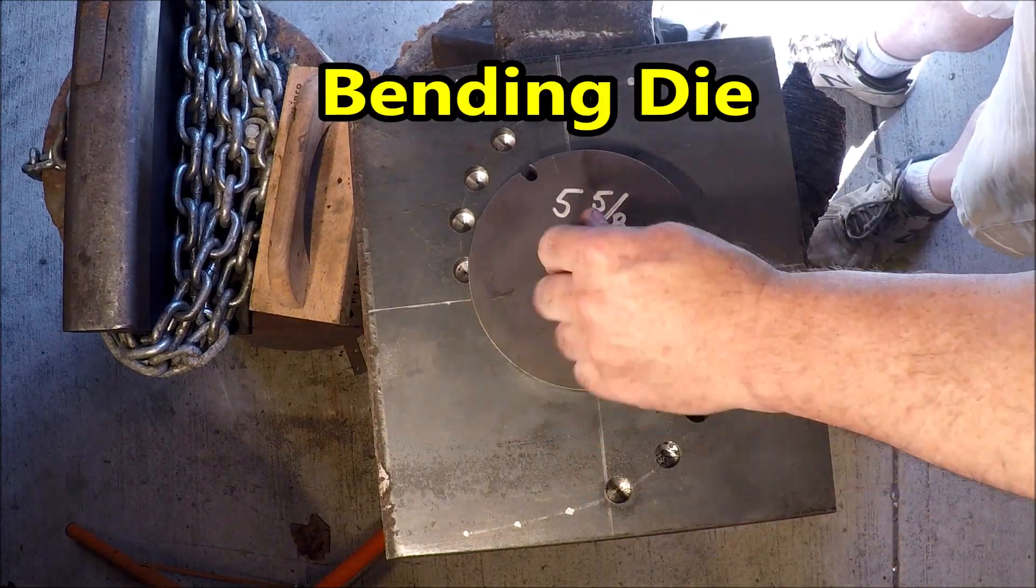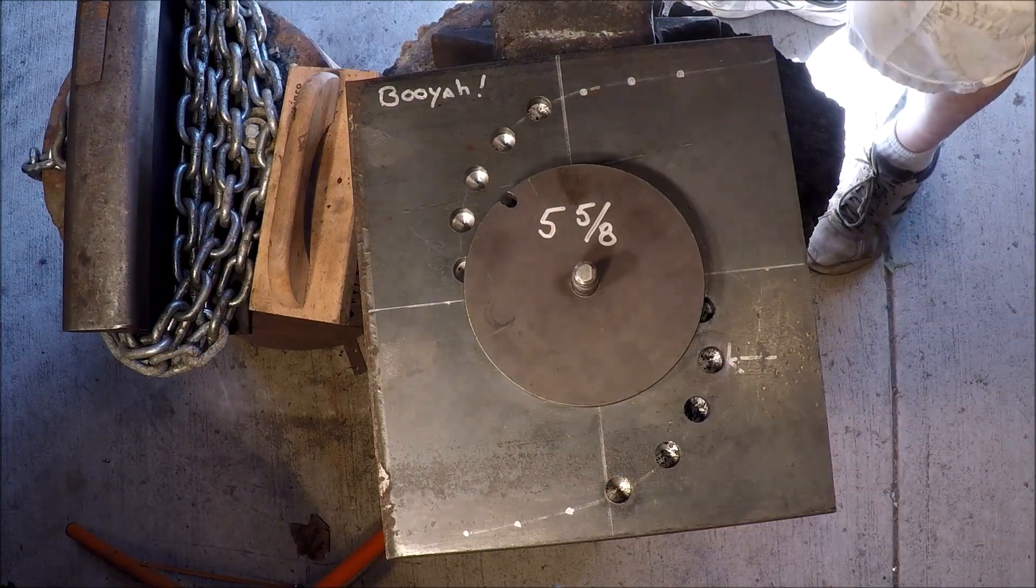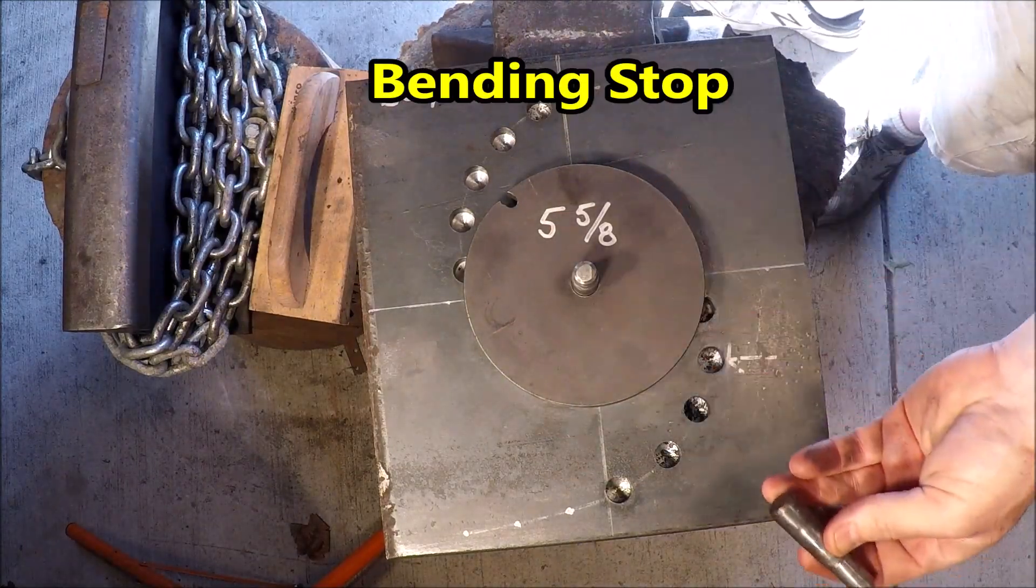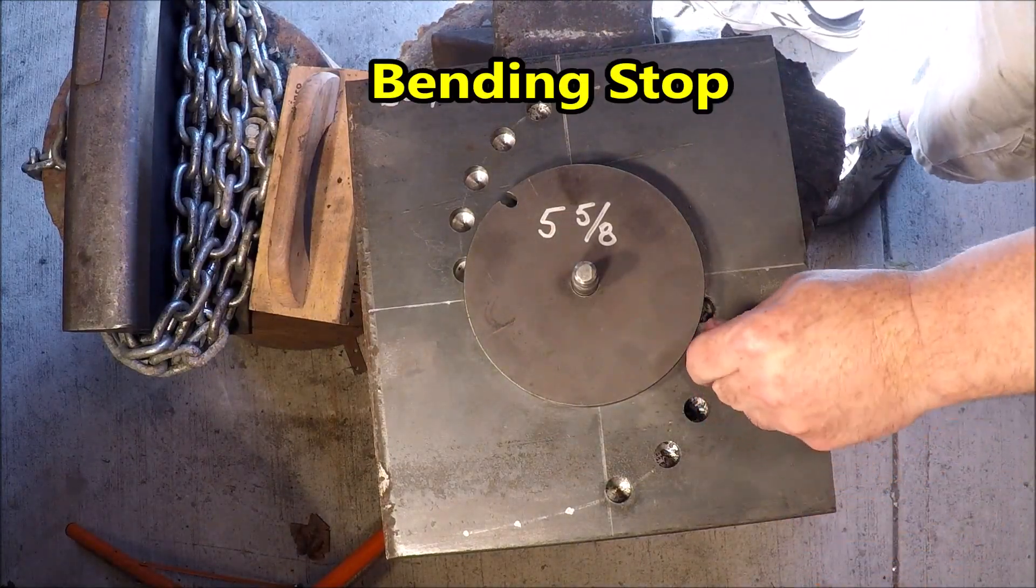And there's a bending die - a circle five and five-eighths inch. And then there's the bending stop. The bending stop is just a simple five-eighths round stock that fits into one of the holes.